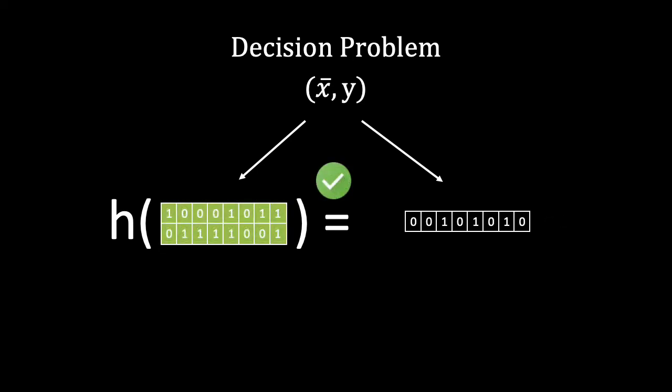Clearly, if we have access to a solution to the decision problem, namely a value whose hash is 42, we can verify it in polynomial time. Thus the decision problem we created is in NP.